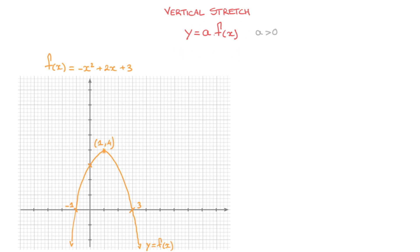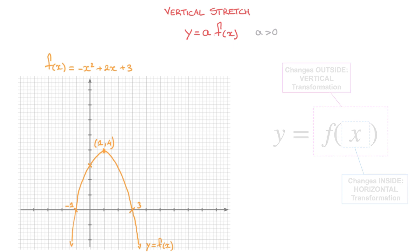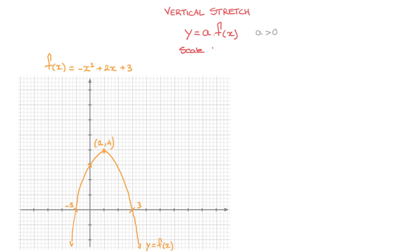We can see that we're dealing with a vertical transformation because the change we're making takes place outside of the function, and this number a is multiplying the entire function. The vertical stretch is characterized by a scale factor, which is equal to a — that's the number we're multiplying the function by. This scale factor is what we'll have to multiply the y-coordinates of our original curve by in order to get the transformed curve.